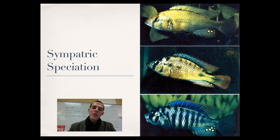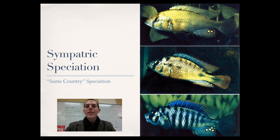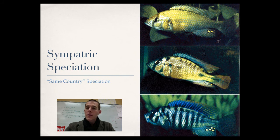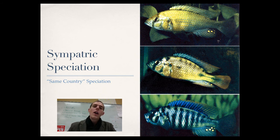The other type of speciation is sympatric speciation — 'same country' speciation. This is a situation where two animals are not geographically isolated; they still live together and still interact, but for some reason they are no longer able to mate and produce viable offspring. Though they are in the same area — even the same pond — they become two different species that can no longer reproduce with one another.